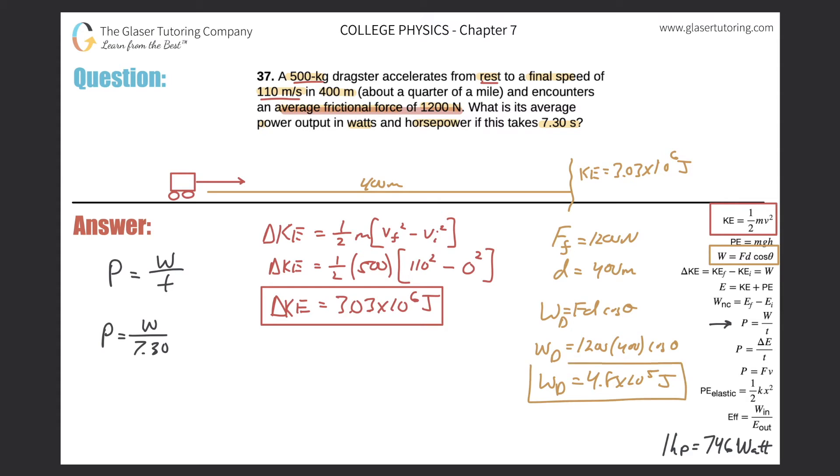Now think about the whole picture. The energy that the car had at the end of the 400 meters, its kinetic energy was 3.03 times 10 to the six joules. But in order to get to this energy value, it had to also overcome the work of friction, or the energy due to friction. So therefore to find now the total energy that the dragster had to produce, guess what we're going to do with these two values? We're going to add these two values together. If we add these two values together, we'll find the total work or the total energy done.